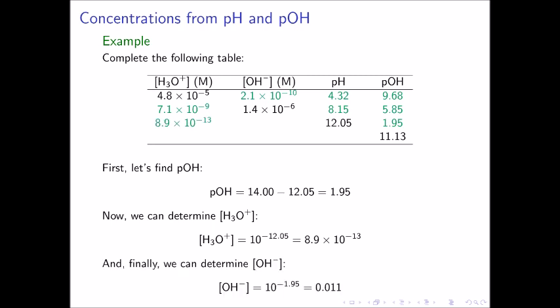And lastly, we can calculate the concentration of hydroxide ion from the pOH. In this case, the hydroxide ion concentration is equal to 10 to the negative pOH, or 10 to the negative 1.95, which gives a concentration of 0.011 molar.